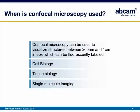When would one need to use confocal microscopy? There are limits to what a confocal can do. It can be used to visualize structures between 200 nanometers and around one centimeter in size, which can be fluorescently labeled. This means it has applications in standard cell biology, tissue biology, and also single-molecule imaging applications.